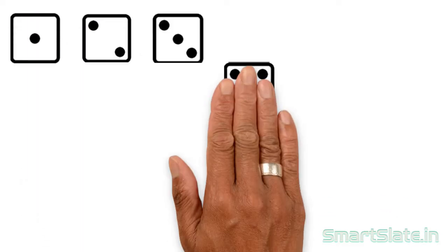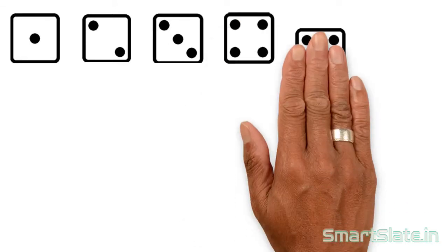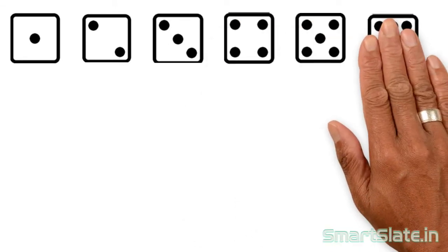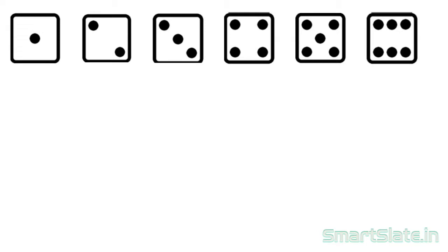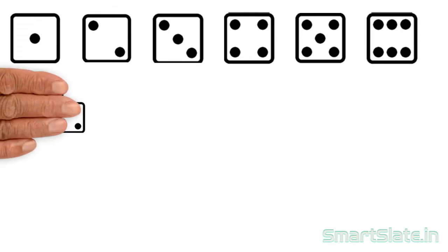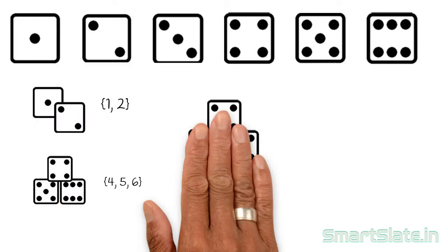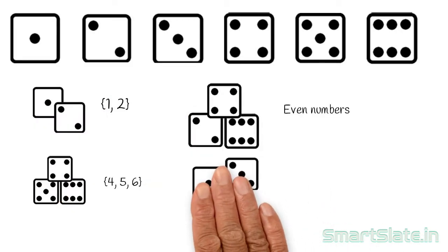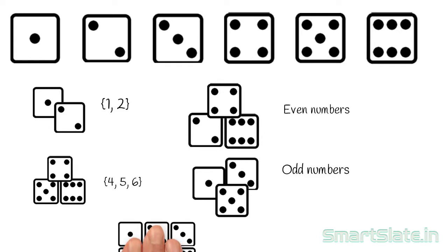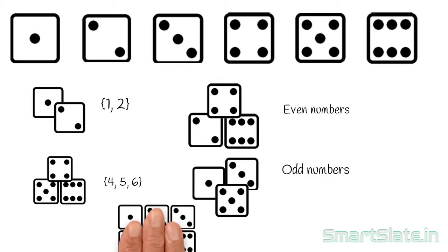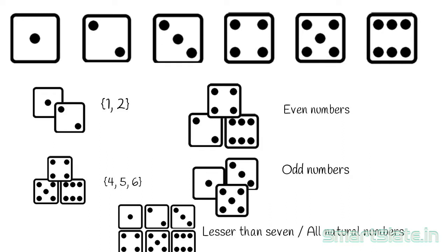Getting 1 can be an event. Similarly, getting 2, 3, 4, 5, or 6 can each be an event. Getting less than 3 or getting more than 3, getting an even number or getting an odd number, getting a number less than 7, getting a natural number, or getting a 0 can also all be events. We can define many events out of one random experiment.